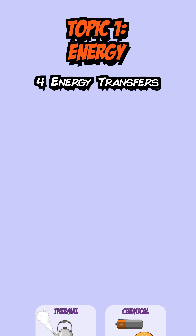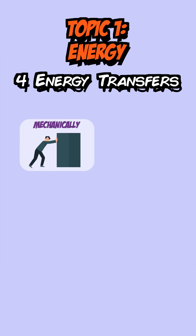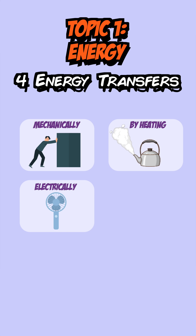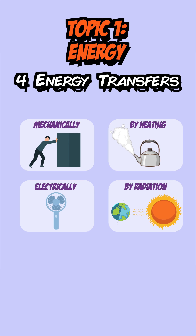All these stores can be transferred from one to another in four different ways: mechanically, when a force is applied; by heating, when energy moves from a hotter to a colder object; by electric work, when current flows in a circuit; and by radiation, when energy is transferred by a wave.